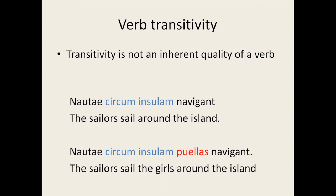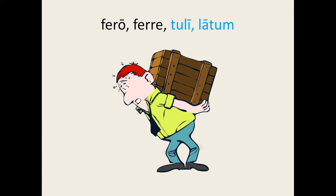Now I'm going to introduce two irregular verbs. First, fero — fero means 'I carry', 'I bring', 'I bear', 'I support.' It can also mean 'I endure.' It is a transitive verb, meaning it takes a direct object — for example, in English we could say 'I carry a heavy load.' It has the principal parts ferre, 'to carry'; tuli, 'I have carried'; and latum, the past participle meaning 'brought' or 'carried.'